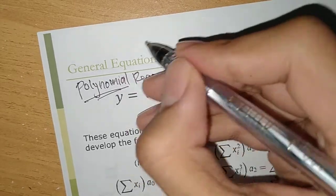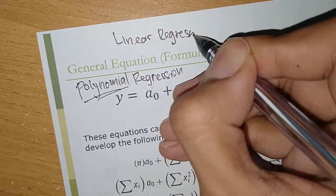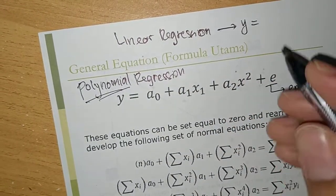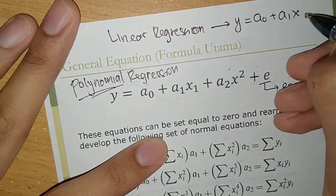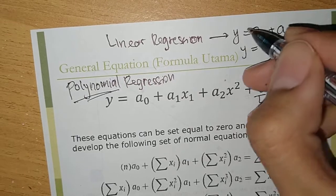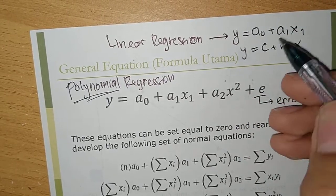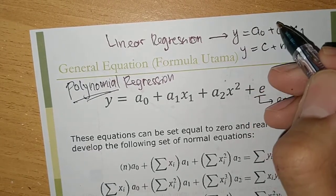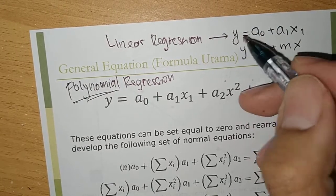Also, to remind you, we have linear regression, and the general equation will be like this. In some books, you will find this form written differently using different symbols, but it is still the same — these two things have the same meaning.